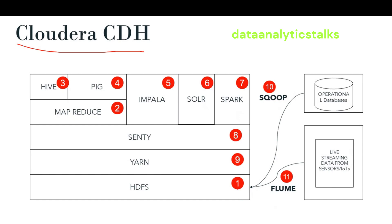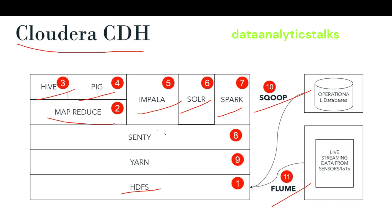You can see that I have marked 11 components. Here you can see 11 components of Cloudera CDH. Cloudera CDH starts from HDFS, then MapReduce, then Apache Hive, Apache Pig, Apache Impala, Apache Solr, Apache Spark, Sqoop, Apache Flume, and we have Sentry and YARN.